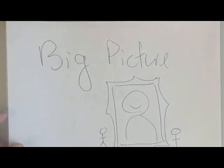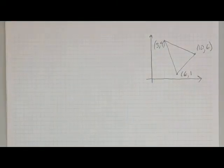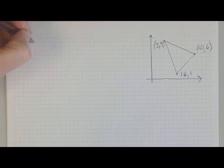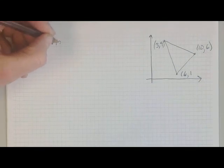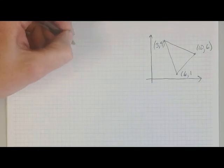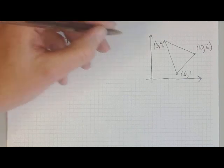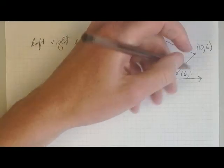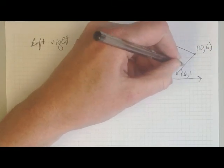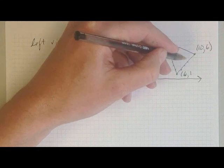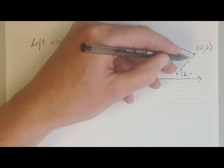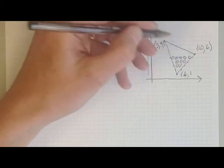Alright, so let's take a step back and look at the big picture. Here's a triangle that I want to draw on the screen, and what I need to do is figure out where the left and the right edge of the triangle is as I go up through the scan lines. As I go through each scan line, I need to figure out where the left and the right edge of the triangle is, and then color in the pixels that lie between the left and the right edge on each scan line.